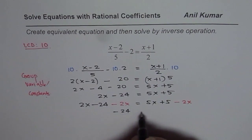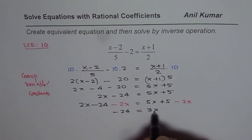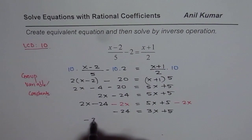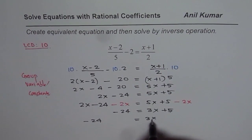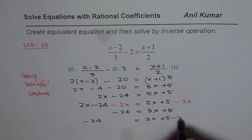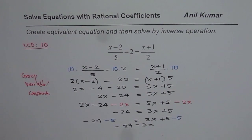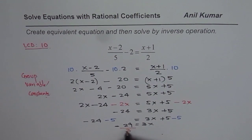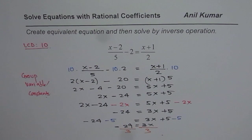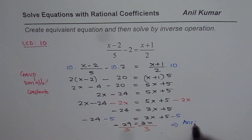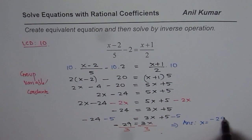So we have minus 24 equals 5x minus 2x, which is 3x plus 5. Now we can collect the constants on one side: minus 24 equals 3x plus 5. To do that, I take away 5 from both sides, which gives us 3x equals minus 29. To find x, we divide by 3 on both sides, and combining those steps gives us x equals minus 29 over 3.